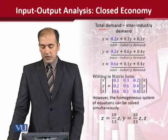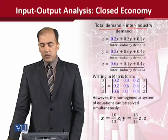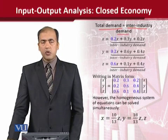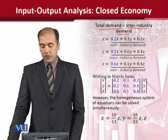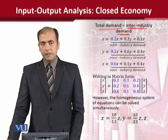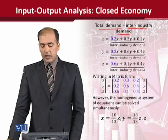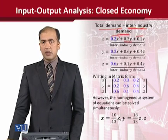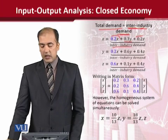Now let us set the equations. Total demand in this case is equal to inter-industry demand, or mutual demand, because in this case there is no external demand by the consumers. Therefore what we have is inter-industry demand only — each industry produces inputs for itself and for the other industries.